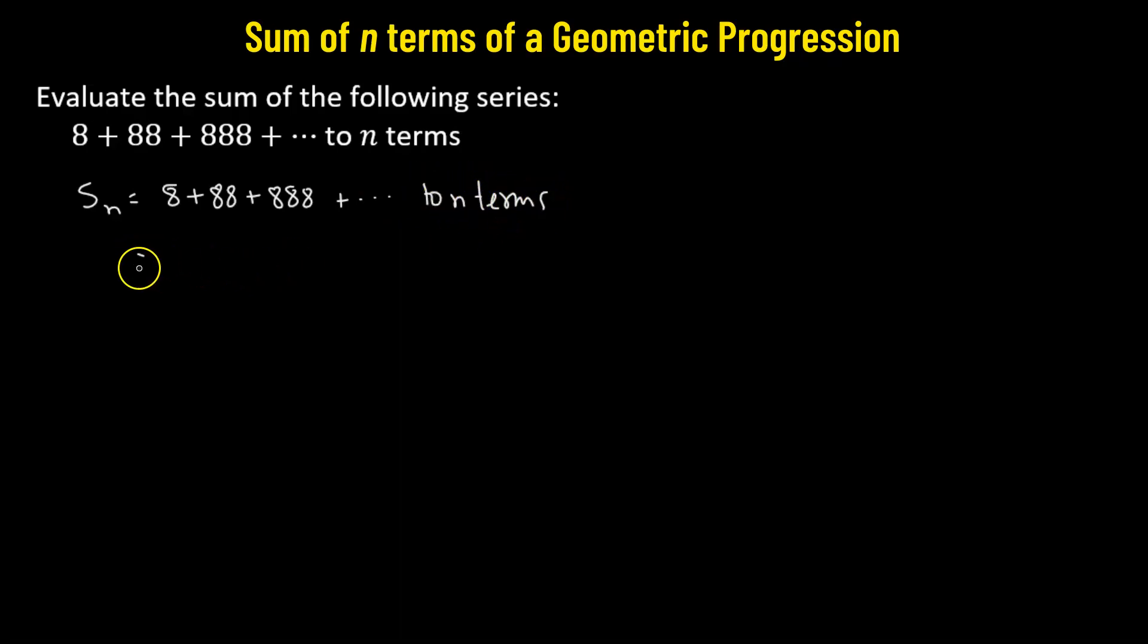Now what we'll do is take 8 as the common factor. We'll have 8 multiplied by 1 plus 11 plus 111, that goes up to n terms.